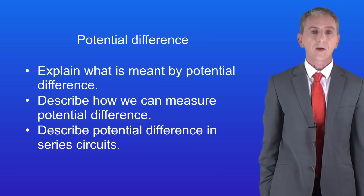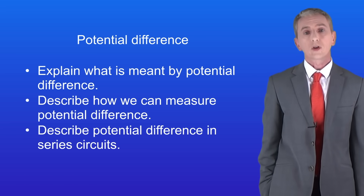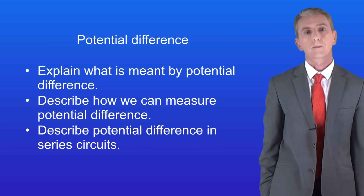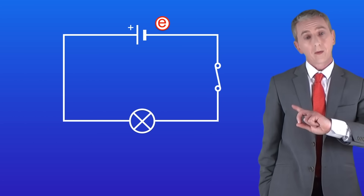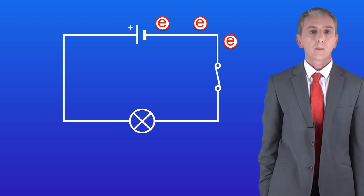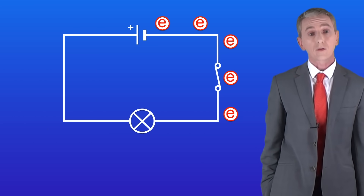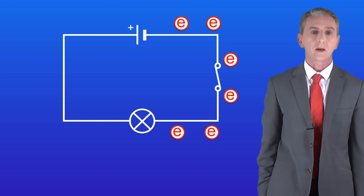So far we've had a good look at electric current, and you should remember that electric current is simply a flow of electrons around a circuit. In this circuit the electrons move out of the cell, make their way through the wire, pass through the lamp, and then return back to the cell.